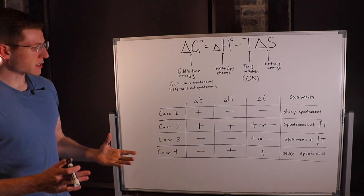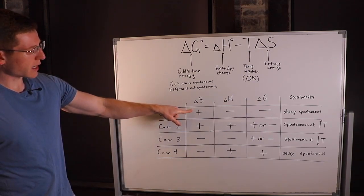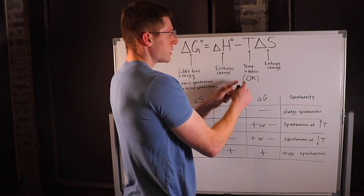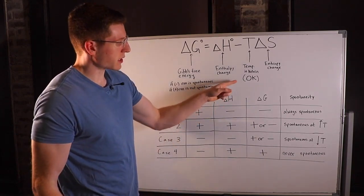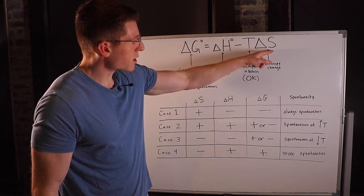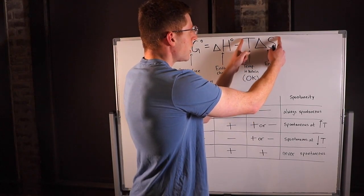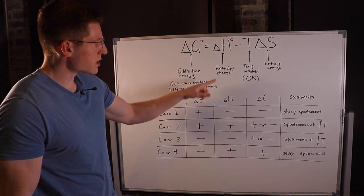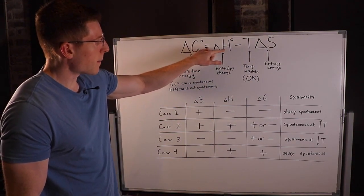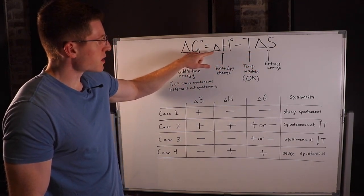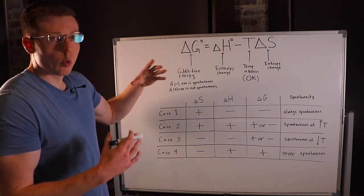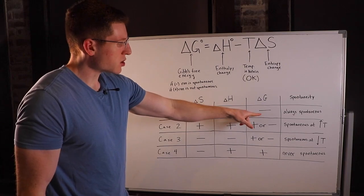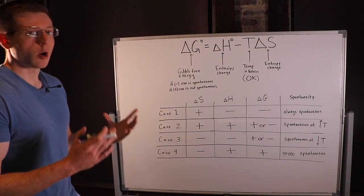Let's think about why this is the case. T is always positive because it's in Kelvin, and if delta S is also positive, then the overall T·delta S term is positive — so we're subtracting a positive number. Delta H is negative, so we have a negative number minus another positive number. It's impossible for delta G to not be negative, so delta G is always negative and the reaction is always spontaneous.